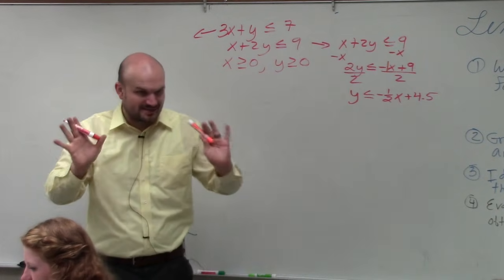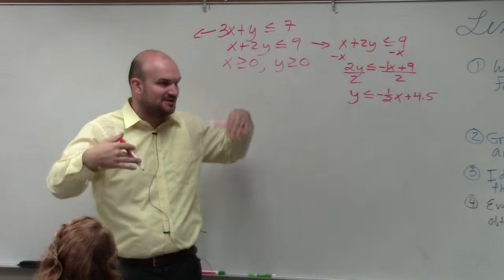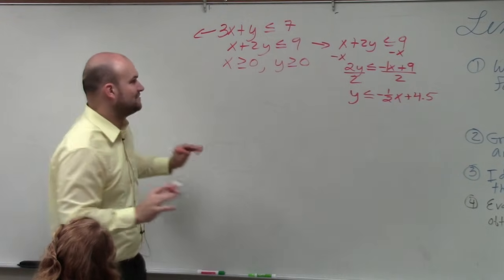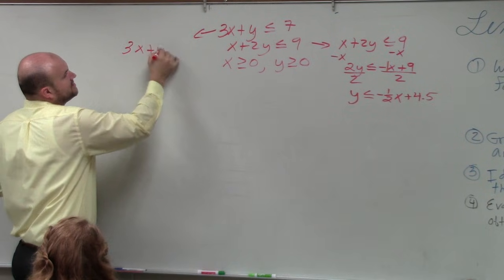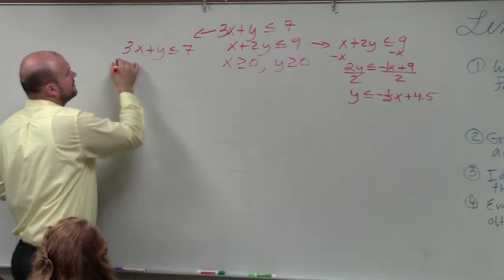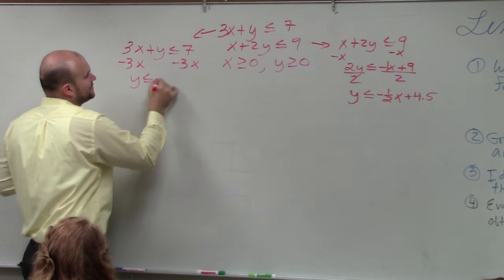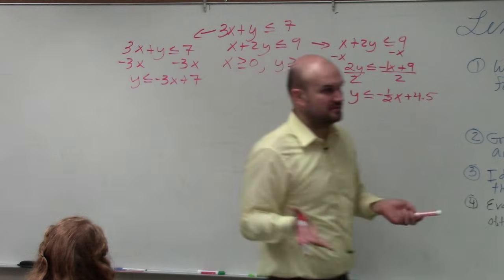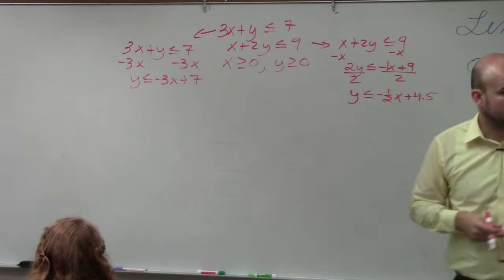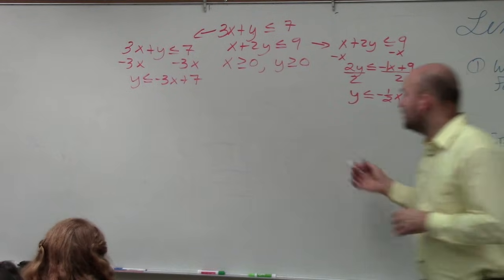All right? This is the one time I am OK with using decimals, because I think it's easier to graph decimals than fractions. But you don't have to convert it. Over here, I will have 3x plus y is less than or equal to 7. Subtract 3x. y is less than or equal to negative 3x plus 7. Does everybody follow me with what I've done so far? This is nothing new that we've covered. It's just solving for y. I know if you have trouble with this, you just need to practice.